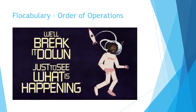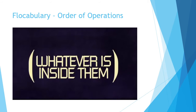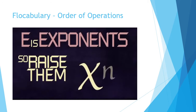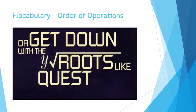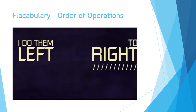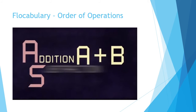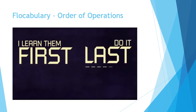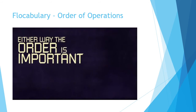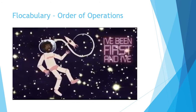P is parentheses — search for them first. Whatever is inside them, you need to do first. E is exponents, so raise them up. Or get down with the roots. MD — multiplication and division — I do them left to right, yes, that's my decision. A-S — addition and subtraction — you learn them first, do them last; that is the fashion. Some say please excuse my dear Aunt Sally, some say PEMDAS. Either way, the order is important just like swim class.